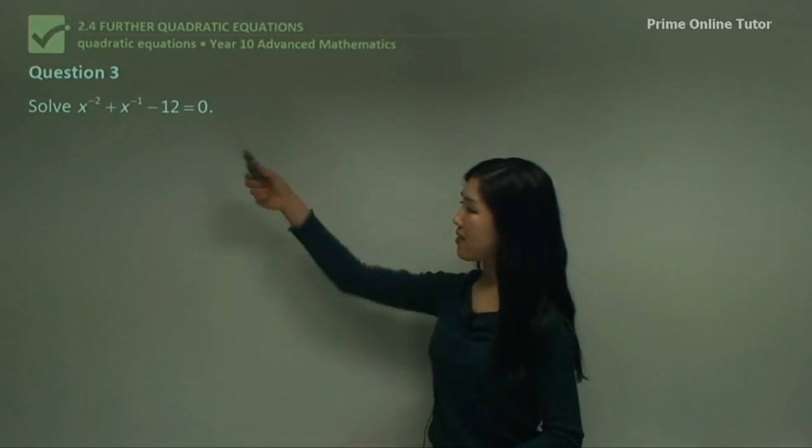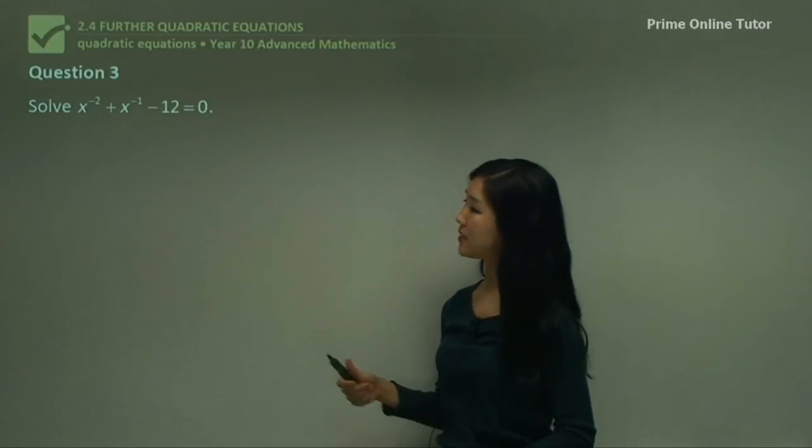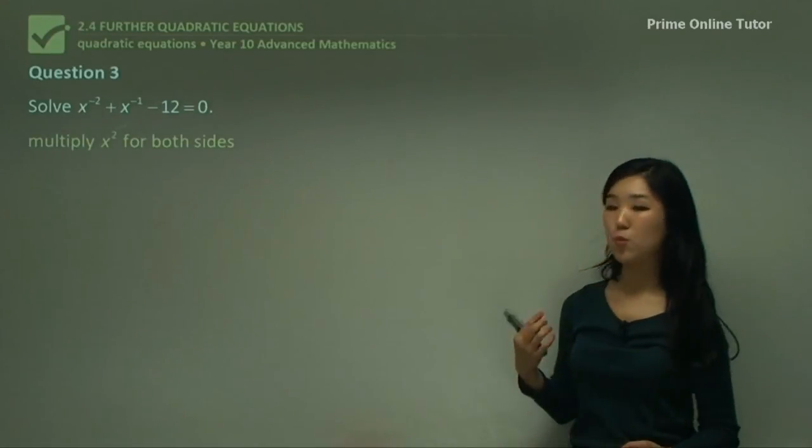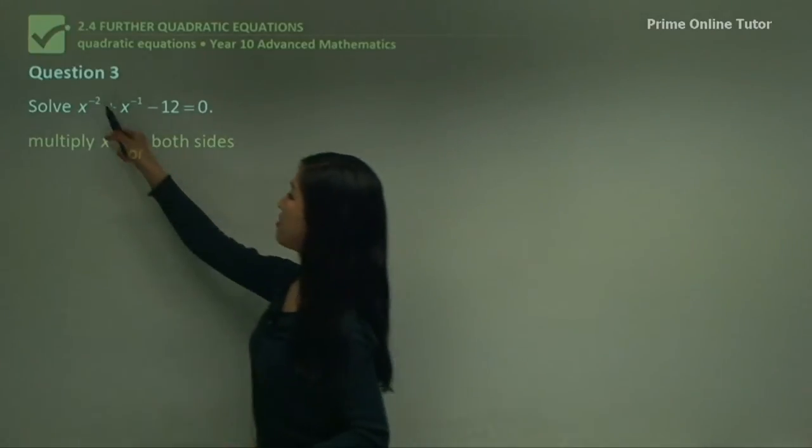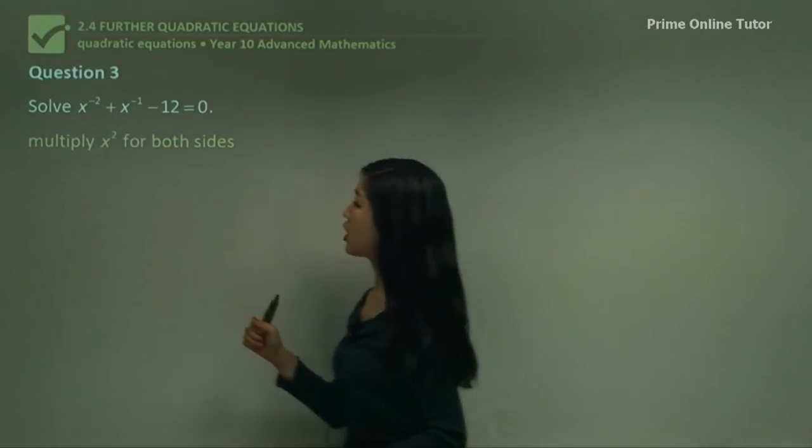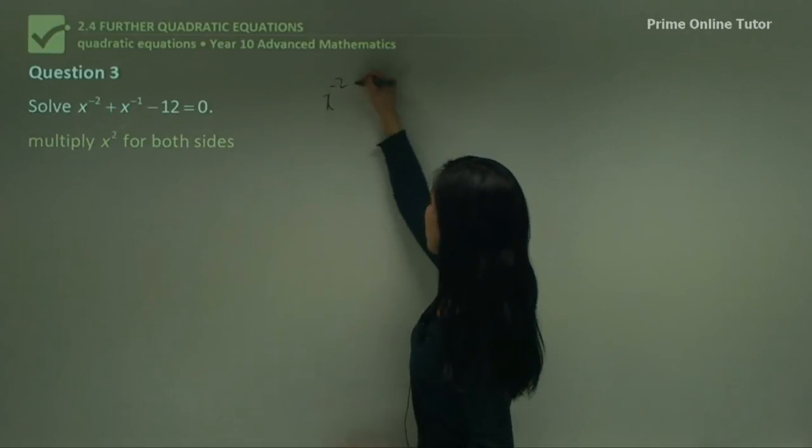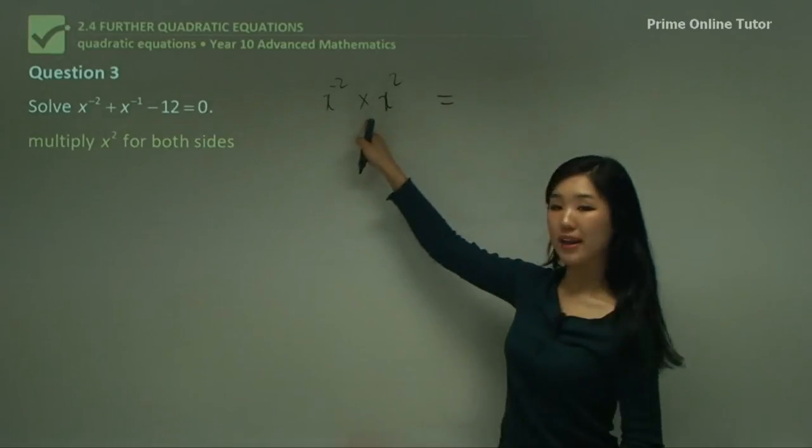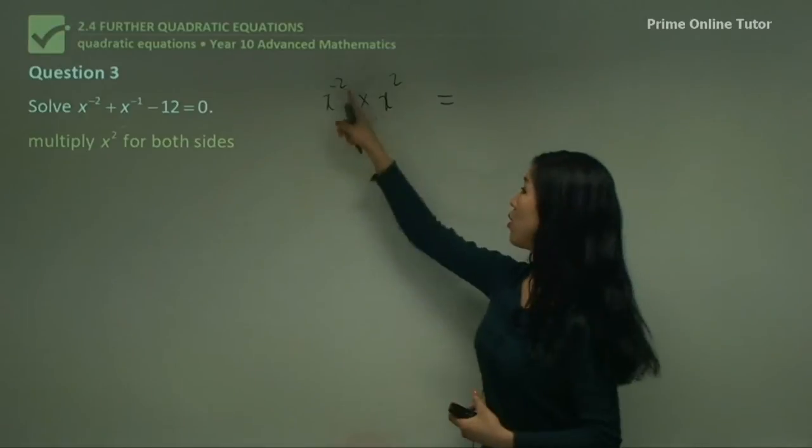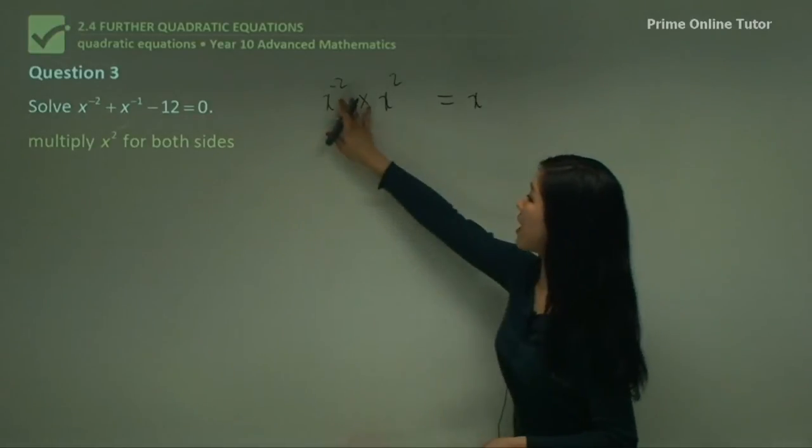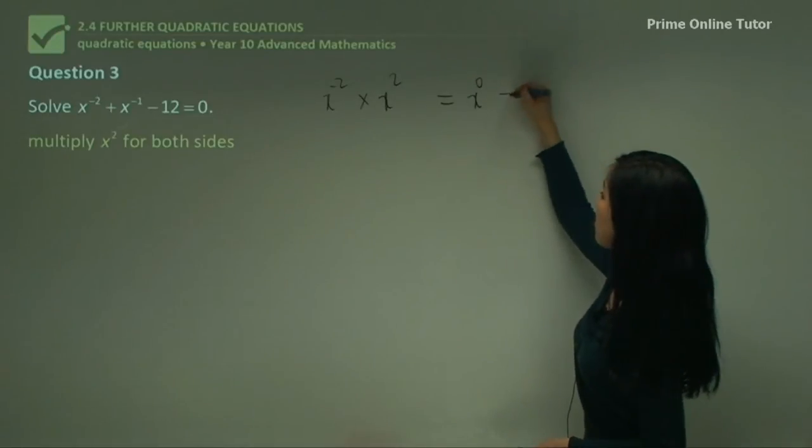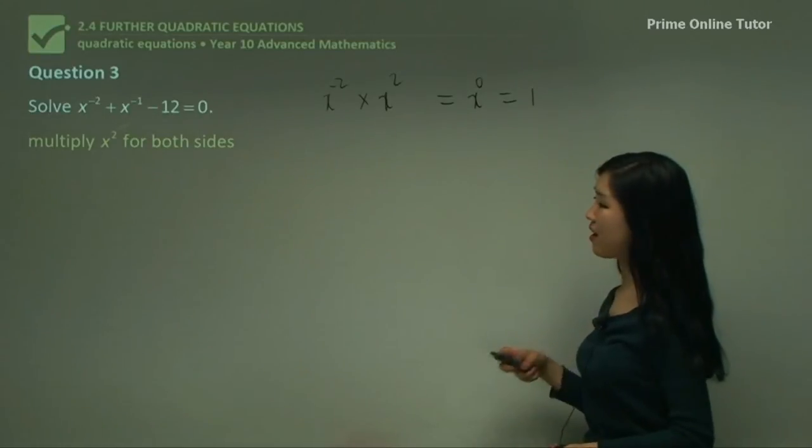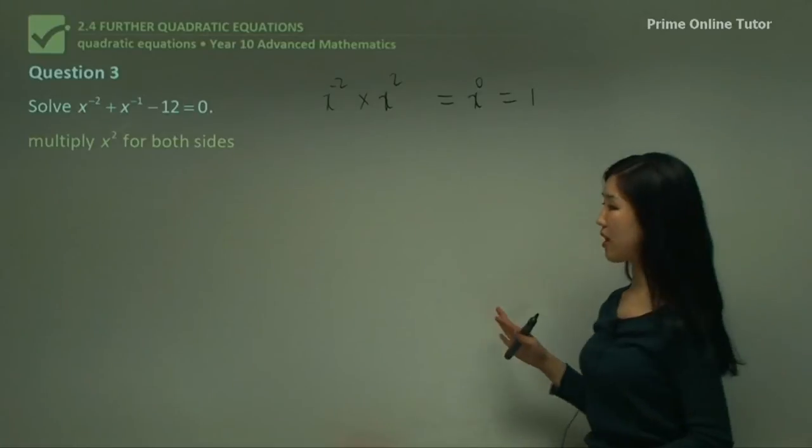Question 3. This time they have some indices there, but see how it's x^-2 and x^-1? I'm going to multiply x² for both sides, because see how the highest integral number is 2. If I multiply x² to the x^-2, what do we do when we multiply indices? We add the indices, don't we? So I'll have x^(-2 + 2), which is 0. That simply becomes 1. So that's just eliminated. So I think we can try to give that a go. Multiply x² for both sides, multiply x² to everything.